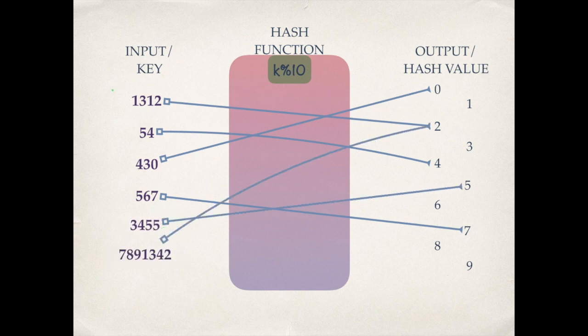It is clear from this example that multiple keys are getting mapped to the same hash value. Since the output has only 10 choices but the input can be any number — very large — of course there will be multiple keys mapping to the same hash value.